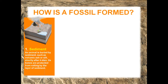How is a fossil formed? It begins with sediment. An animal is buried by sediment, such as volcanic ash or silt. Shortly after it dies, its bones are protected from rotting by the layer of sediment.